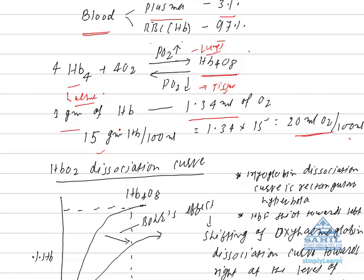Hemoglobin is the only content of blood which is measured in grams. Other contents are measured in milligrams.